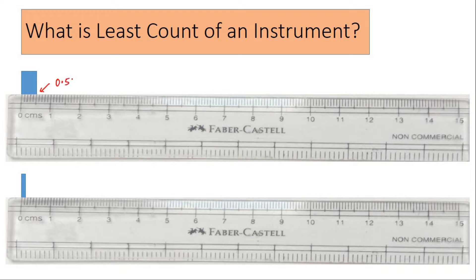If I keep on reducing the length of the rod, what is the smallest length that can be measured with the help of the scale? The answer would be 0.1 centimeter, because below 0.1 centimeter there are no divisions.